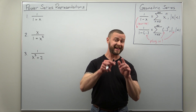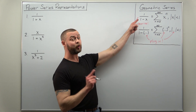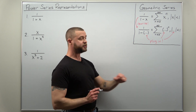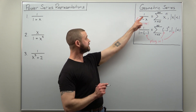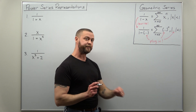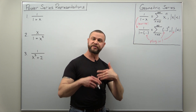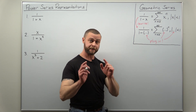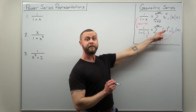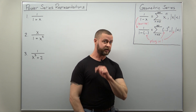Greetings fellow mathematicians. We're going to look at the problem of finding power series representations for simple functions by using the main result of a geometric series. Our functions are basically going to be fractions, and our starting place is the sum of a geometric series: one divided by one minus x. We're going to rewrite our function to match that pattern, and whatever expression fits in the denominator, we plug it into the geometric series result and the interval to get the interval of convergence.